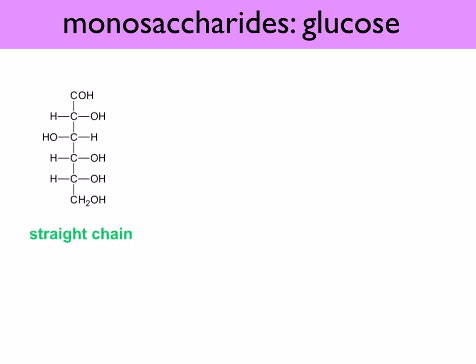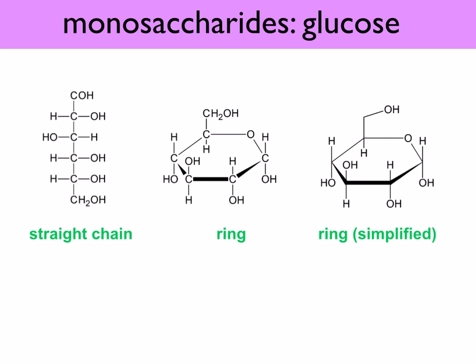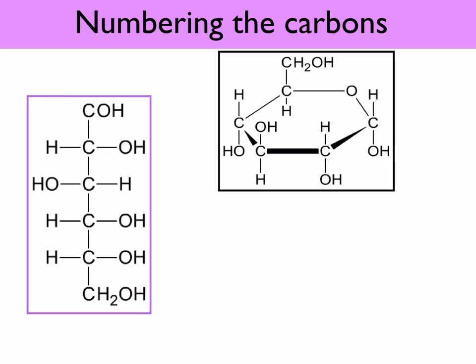The structure of glucose can be represented in different ways. You've got the straight chain where the carbon atoms are written in a row. Glucose usually forms a ring structure, and if you draw the ring without the carbons, you get the simplified ring structure. The first carbon is always on the right of the molecule, below the oxygen, then it goes in sequence: one, two, three, four, five. The sixth carbon looks like the branch. Take a moment to pause and copy this out because you need to know how to draw glucose.